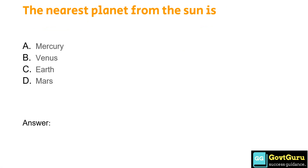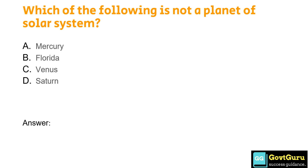The nearest planet from the Sun is: Option A: Mercury, Option B: Venus, Option C: Earth, Option D: Mars. The correct answer is Option A, Mercury. Which of the following is not a planet of the solar system? Option A: Mercury, Option B: Florida, Option C: Venus, Option D: Saturn. The answer is Option B, Florida.